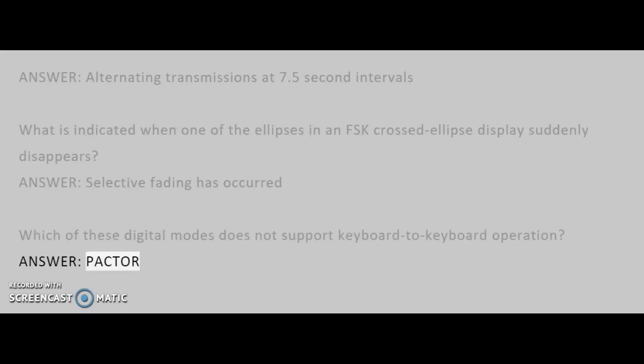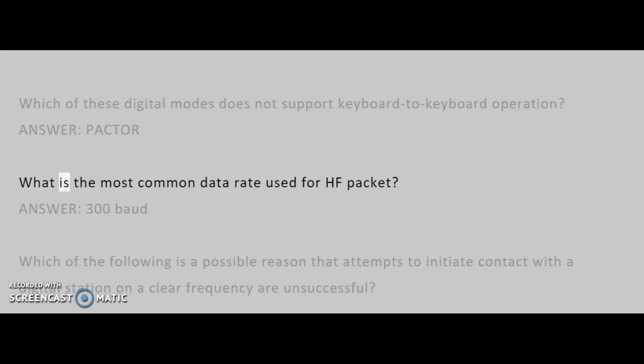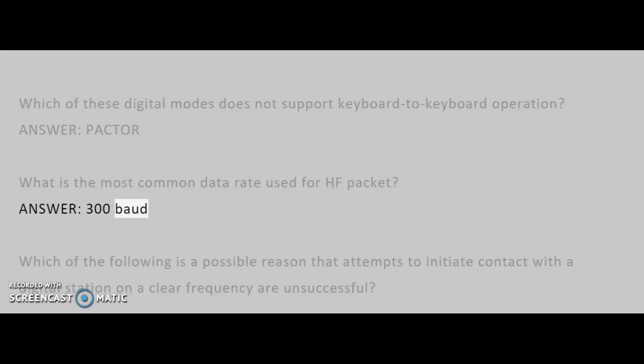What is the most common data rate used for HF packet? Answer: 300 baud.